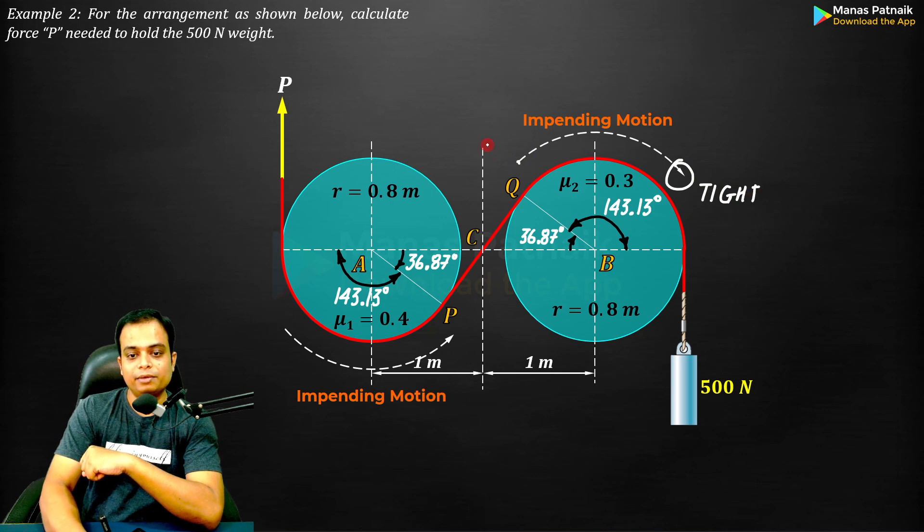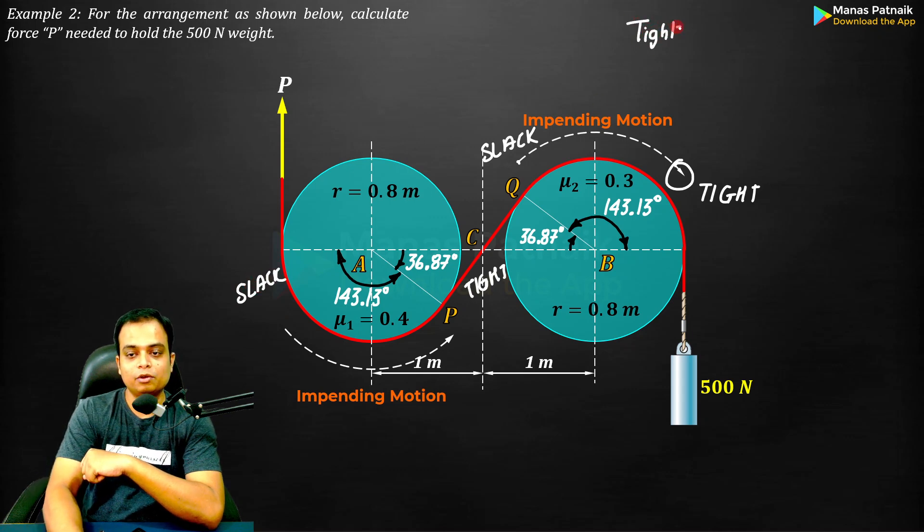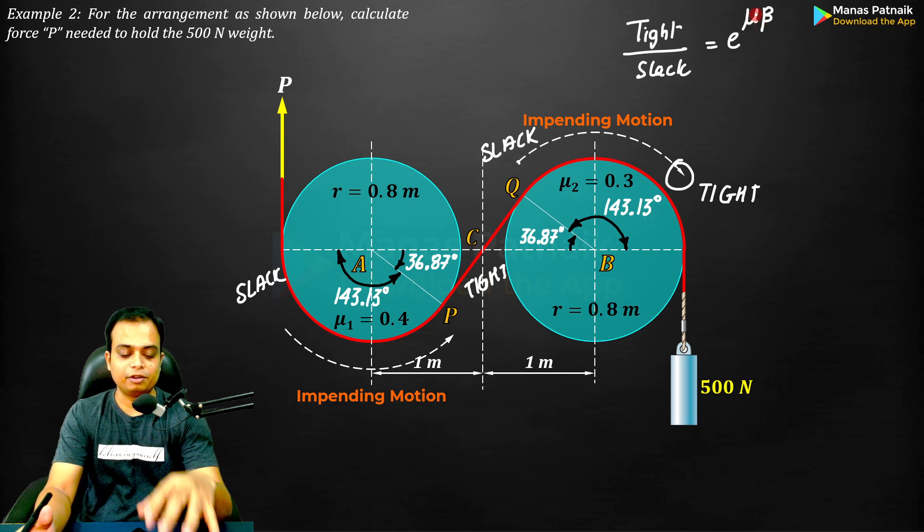Always remember, please note this: arrowhead means the tighter side and arrow tail means the slack side. We always remember that the tension of the tighter side to the slacker side is equal to e^(μβ), and this is the formula we derived in previous sessions.